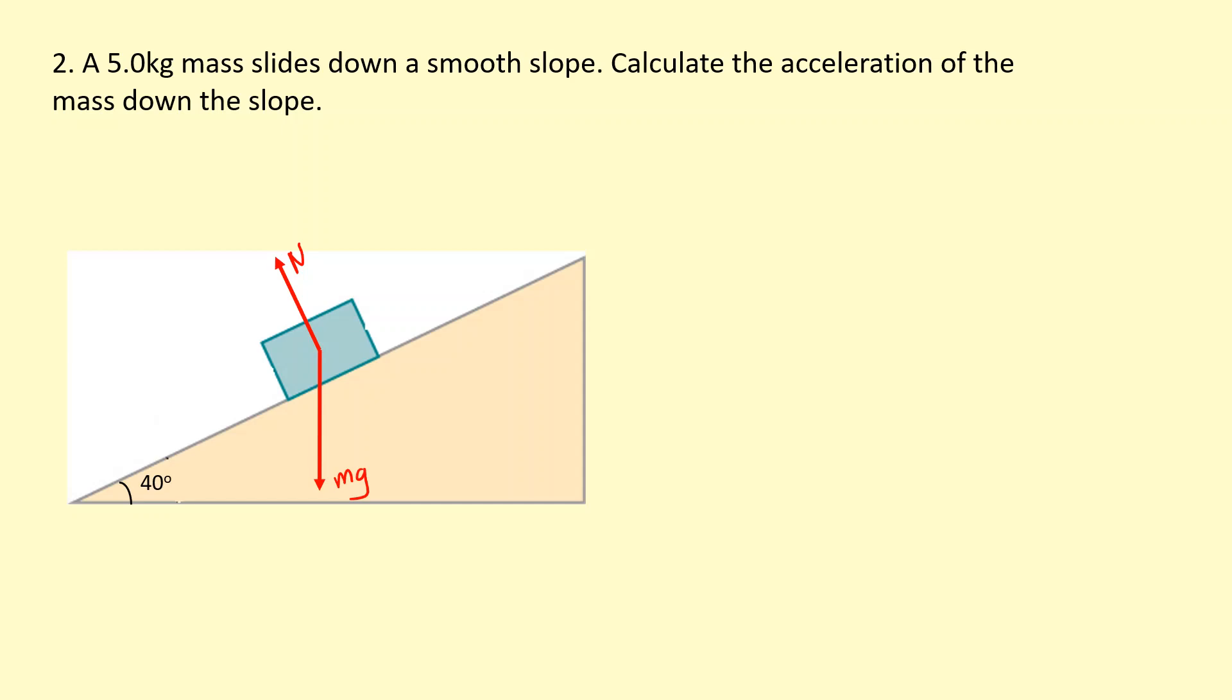Because the motion of the box is going to be parallel to the slope, we want to resolve the weight parallel and perpendicular to the slope. So this component, Mg cosine 40, is going to equal N. They're going to balance out so the box doesn't go through the floor. But the acceleration down the slope is going to be caused by this component, Mg sine 40.